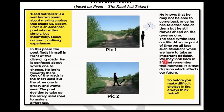We cannot go on two routes — we have to choose one. We may look back in life and remember that moment. It is that decision which affects our future. We will stop in our lives and see that moment when we had to make a choice. The decision we make decides what will happen next. So before you make difficult choices in life, always think twice — just stop and think twice and then take a decision.